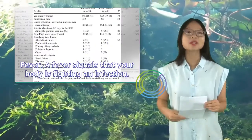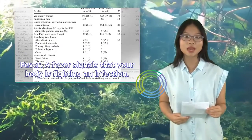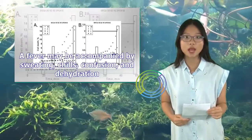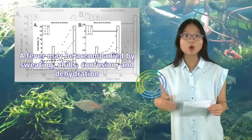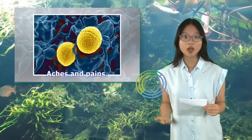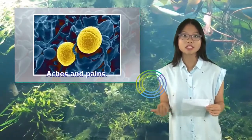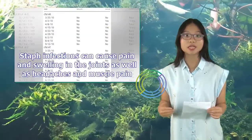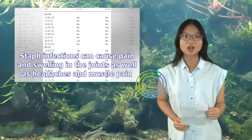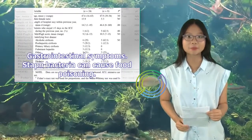A fever may be accompanied by sweating, chills, confusion, and dehydration. Staph infections can cause pain and swelling in the joints as well as headaches and muscle pain.